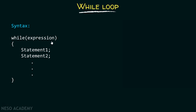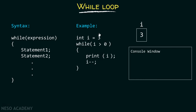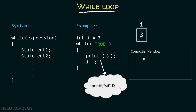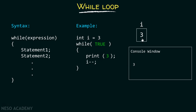Now let's consider one example to understand how while loop really works. Here I have declared a variable i and assigned it a value of 3. Inside this while loop, I am checking the condition: is i greater than 0 or not? Since i is 3, and 3 greater than 0 is true, we go inside the while loop and print the value 3 on the console window. After that, we decrement the value of i, so i now becomes 2.